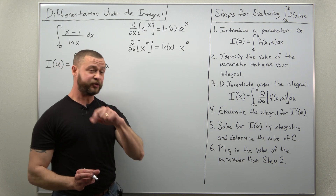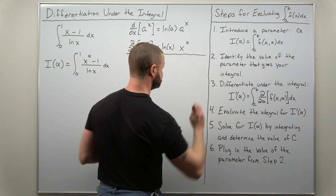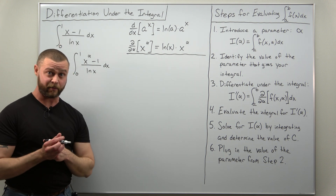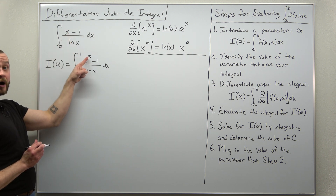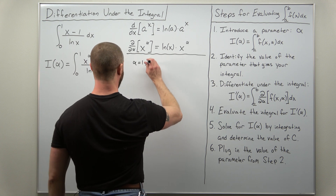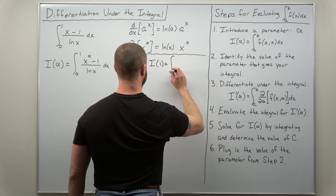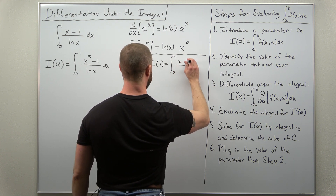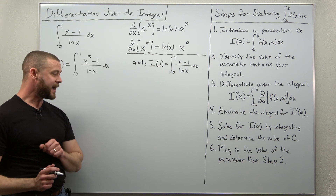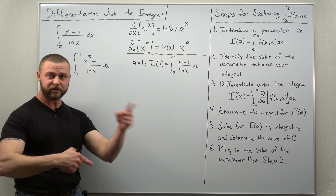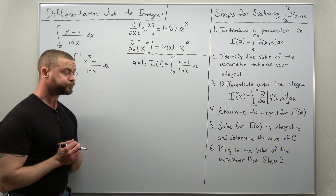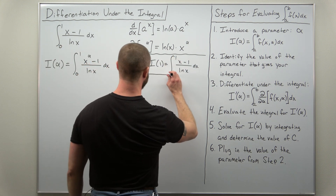Step 2: figure out the value of the parameter that gives you the integral you're trying to evaluate. Notice we have x to the first power in the original integral, so it corresponds to alpha equals 1. Plugging in alpha as 1 gives us our original integral from 0 to 1 of (x minus 1) divided by ln(x). We'll come back to this at the end.